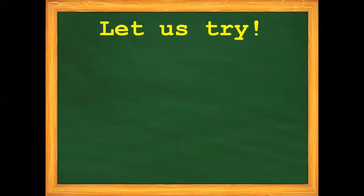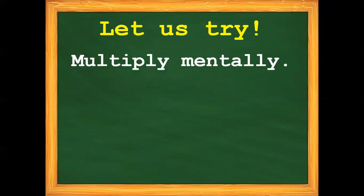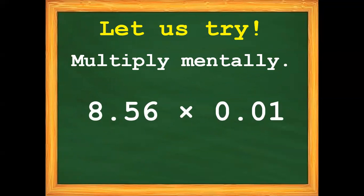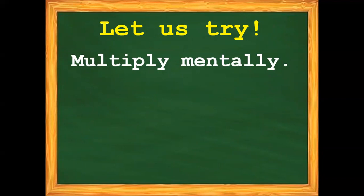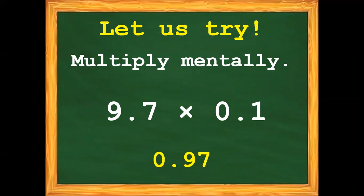Let us try. Multiply mentally. Eight and fifty-six hundredths times one-hundredth. Answer: eight thousand five hundred sixty ten-thousandths. Next, nine and seven-tenths times one-tenth. Answer: the answer is ninety-seven hundredths.